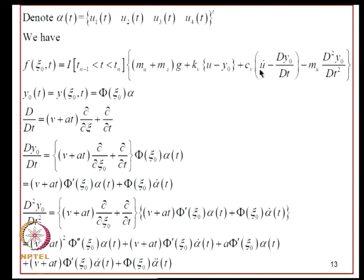We must handle the terms D/DT of Y_0 and D²/DT² of Y_0. We write D/DT as the operator (V + AT)·∂/∂XI + ∂/∂T, which operating on Y_0 produces the corresponding equation. The second derivative is obtained by applying this operator again, so we compute the required terms for the expressions.